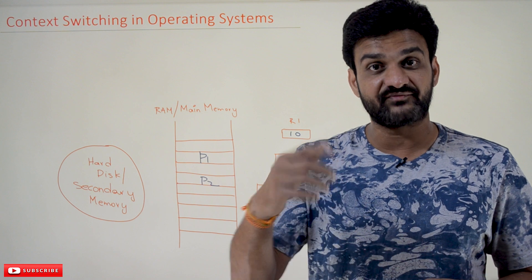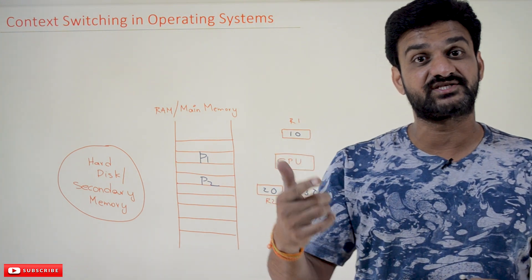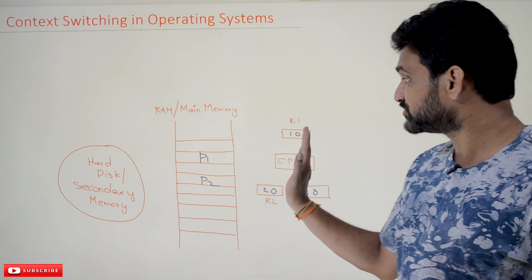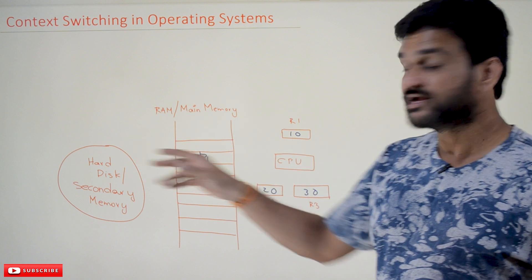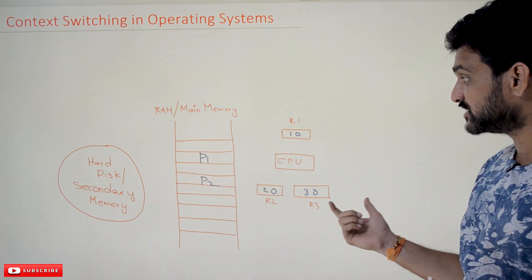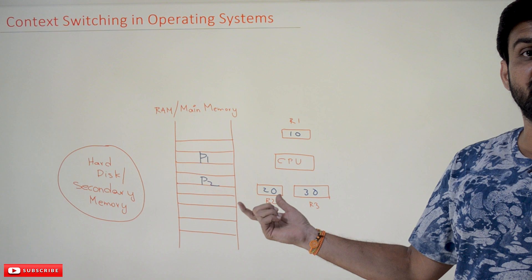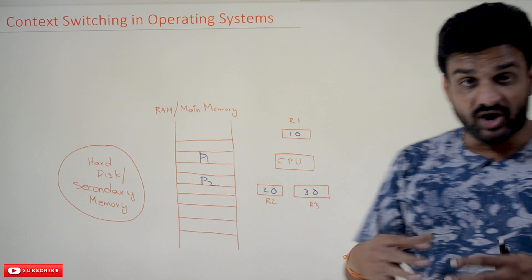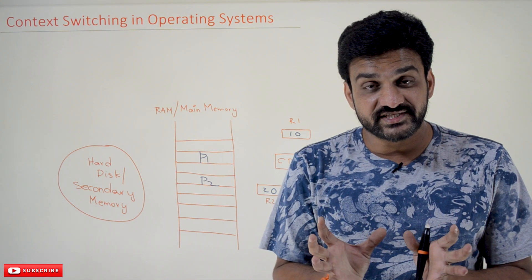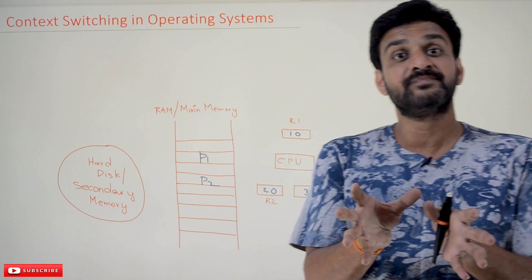So the context switching, the time taken for that context switching is unavoidable and it totally depends upon the hardware and the type of instruction, the amount of time taken by the instructions to switch from one place to another, and also the number of general purpose registers that we are having.